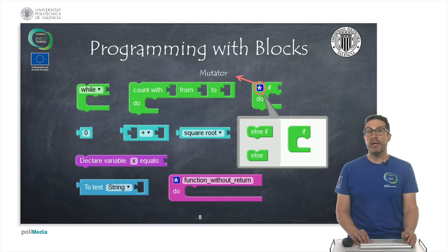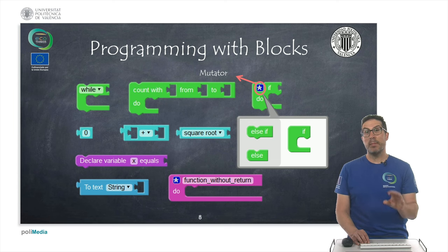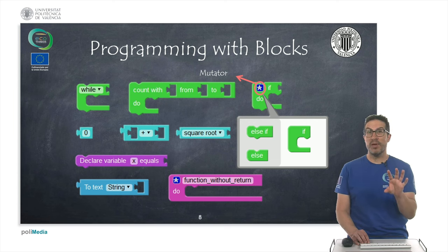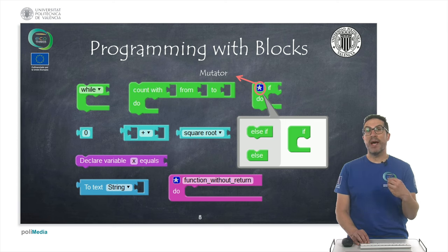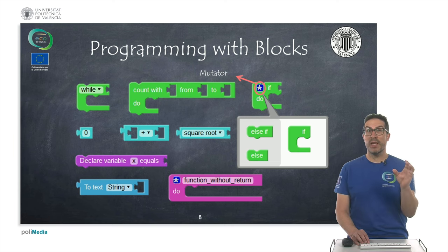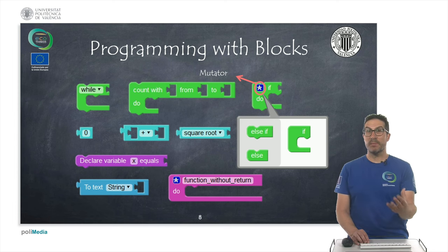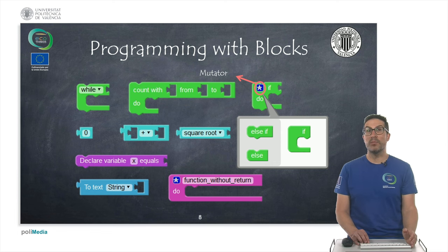Finally, some instructions — if you see this star here — it's a mutator, which means that if you click on it, you will see a pop-up window in which you can add to this instruction, which is the basic shape, additional instructions. Like in this case an if instruction, in which you can add additional cases like else-if cases and also the else case. So that will modify the aspect of the final instruction, and that's why it's called a mutator.